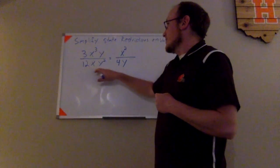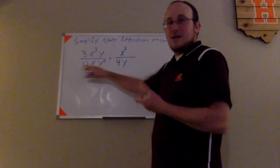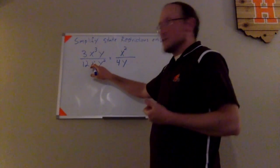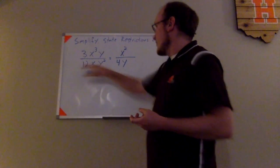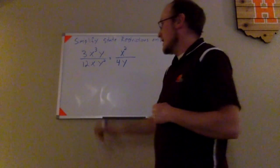If I look back at the original function here and say, well what could x not be because it would make this entire denominator equal to 0? That would be 0, because if x was 0, it doesn't matter what the other stuff is in the denominator. 0 times anything will be 0.